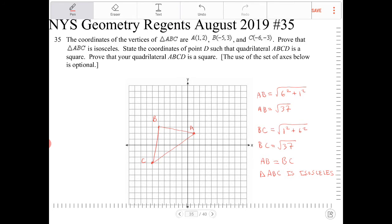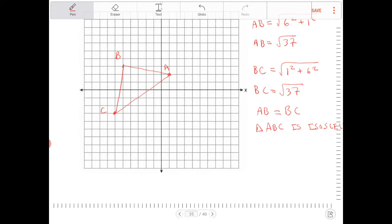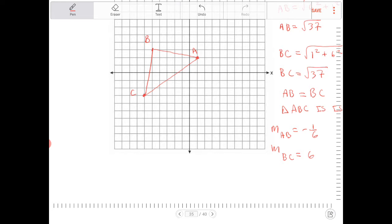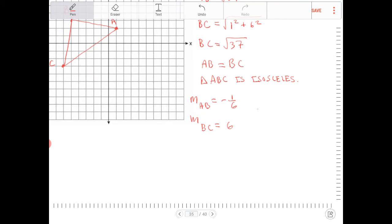So just looking at this, the slope of AB is we're going to go down 1 and over 6, so it's negative 1/6. The slope of CB or BC is positive 6. So what we have here is AB is perpendicular to BC because of negative reciprocal slopes. So that's important when it comes to proving something's a square. We need to have a right angle.